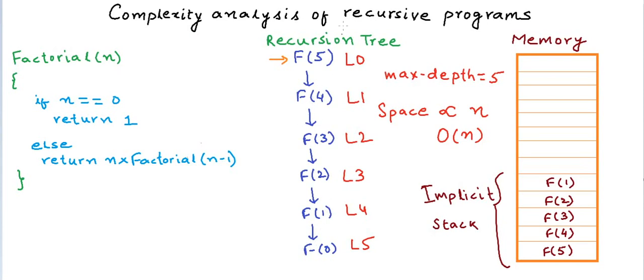So now the stack grows to a maximum of n units. In this particular example, when we are calculating F(5), it grows to a maximum of 5 units. And as soon as we reach F(0), then F(0) simply returns 1 and it does not grow any further. And now F(1) resumes. And now F(1) finishes and it is also removed or popped from the stack. And now F(2) resumes and F(2) is also removed from the stack once it finishes.